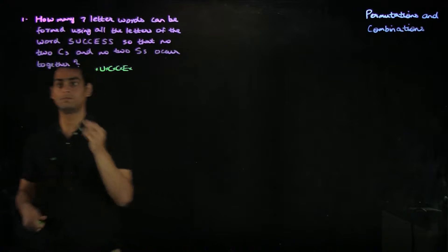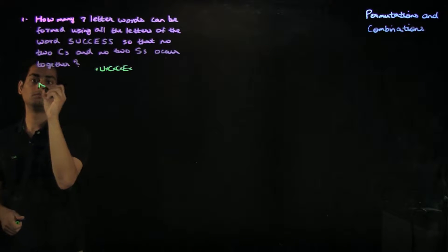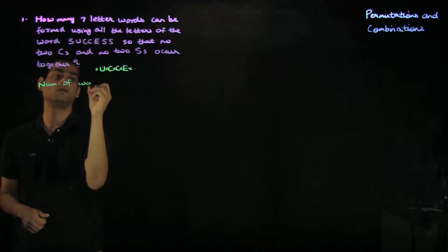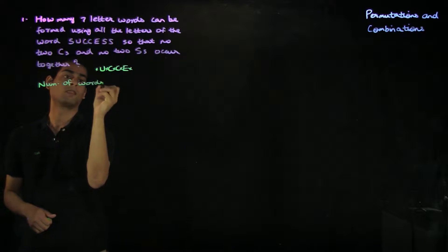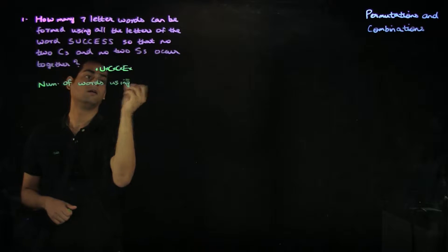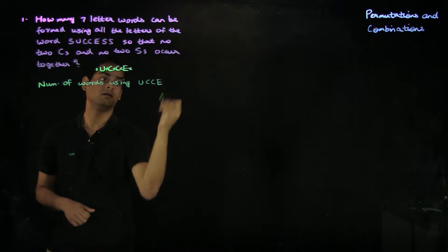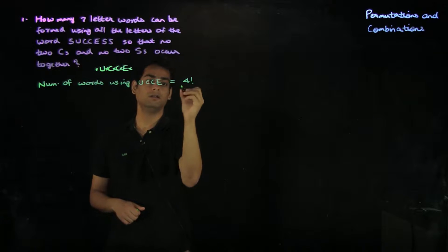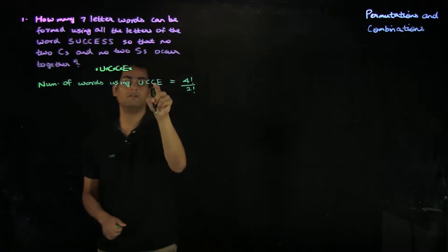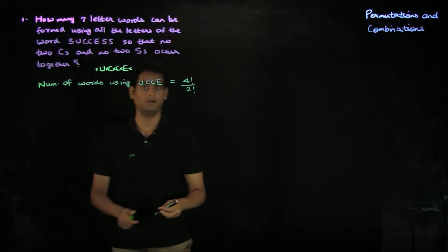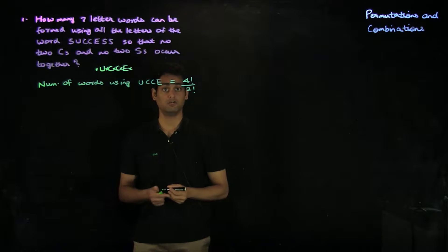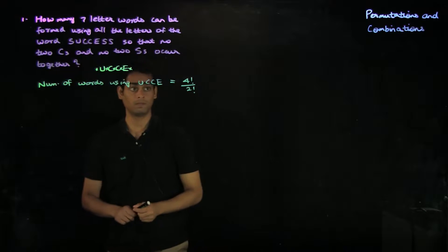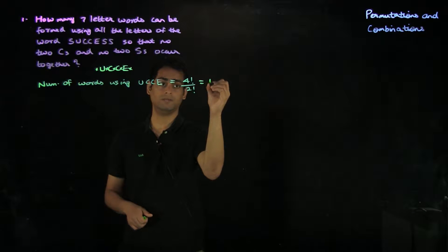The number of words using U, C, C, and E is nothing but four factorial divided by two factorial, since you have two similar objects — two C's — and so you have to divide by two factorial. This turns out to be 12.